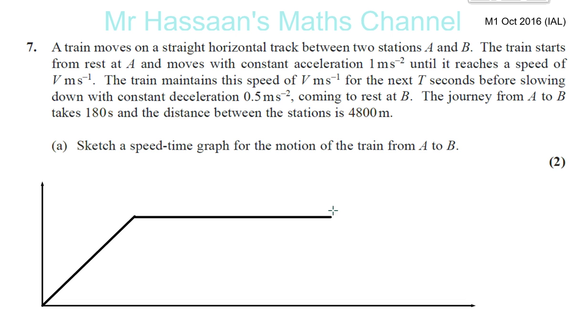It reaches a speed of V m per second and it maintains that speed for the next T seconds. So that's T seconds. Then slowing down with constant deceleration 0.5 m per second squared, coming to rest at B. So it's going to be like a shallow gradient here, half the gradient. It's just a sketch, not accurate.